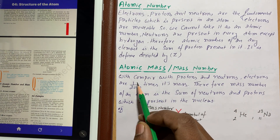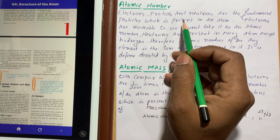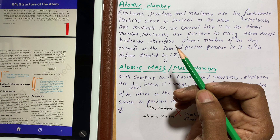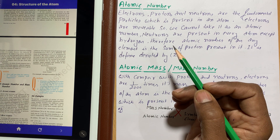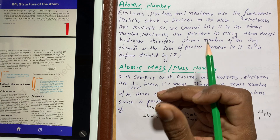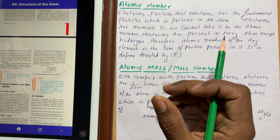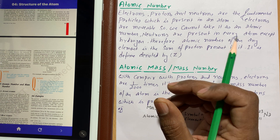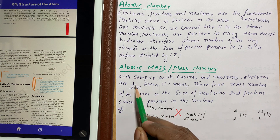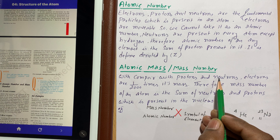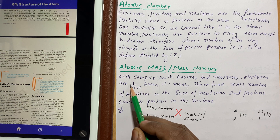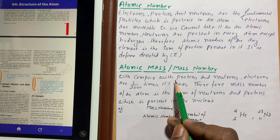Next is atomic mass. There are three fundamental particles: electrons, protons, and neutrons. Protons and neutrons are 2,000 times heavier than electrons. So the mass of protons and neutrons is much greater than the mass of electrons. The mass of electrons is very small — it is 1/2000 times that of a proton or neutron — so it is negligible. Therefore, the actual mass of an atom is due to only the sum of protons and neutrons.